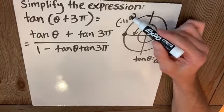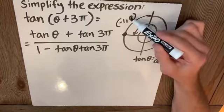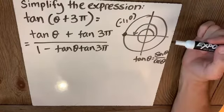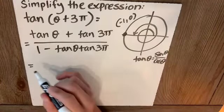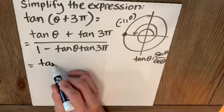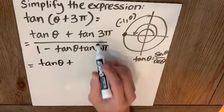Y over x, or sine of 3π over cosine 3π is going to be 0 over -1, which is 0. So this is going to simplify to tangent of θ plus, you guessed it, I'm going to substitute in a 0 there,